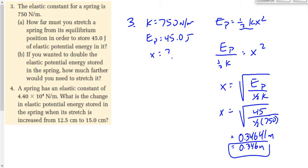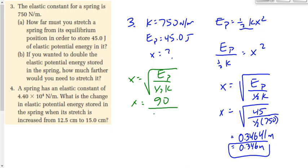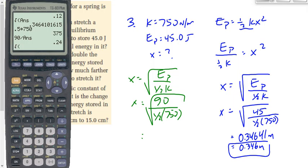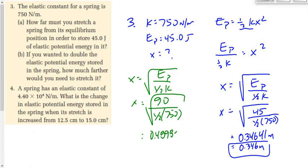Now we want to double the elastic potential energy to 90 joules. The spring constant doesn't change. We solve for x again: x equals the square root of 90 over one-half of 750, which is the square root of 90 over 375. Calculating: 0.5 times 750 is 375; 90 divided by 375, then square-rooted, gives 0.48989 meters. That's the final displacement needed to store 90 joules.